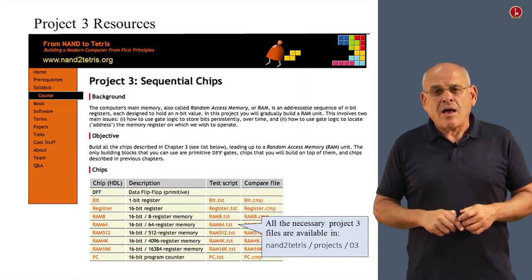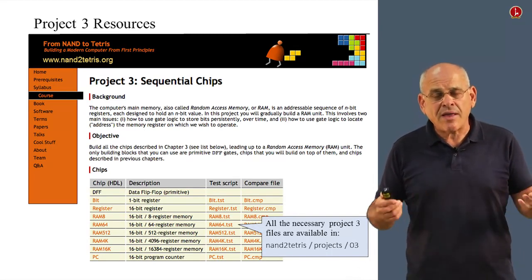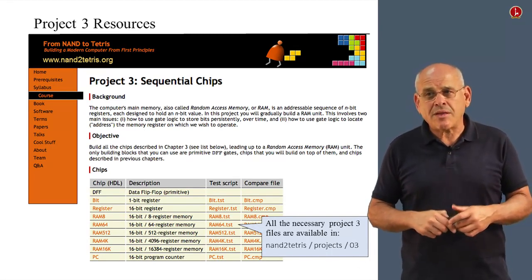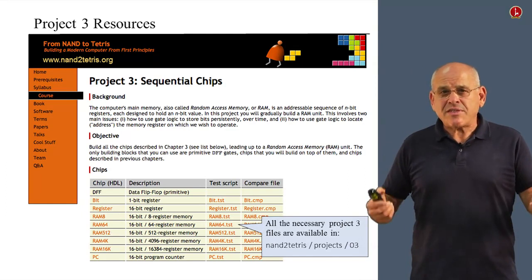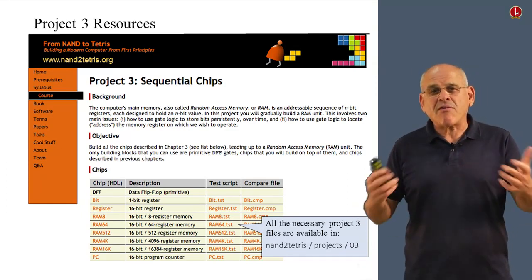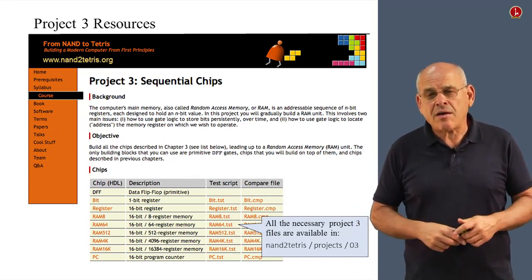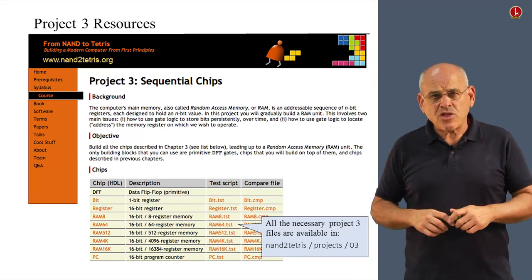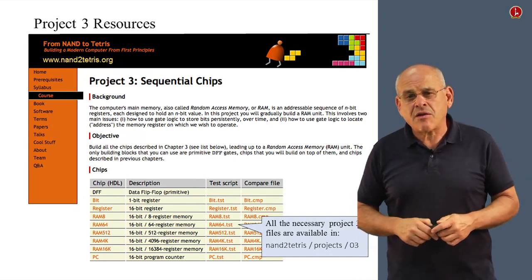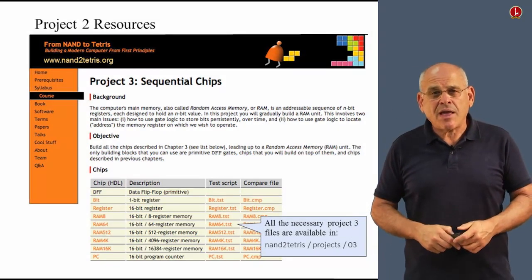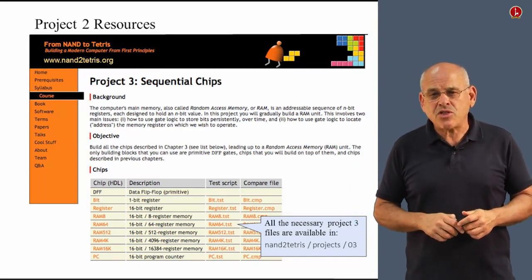As usual, you go to the NAND to Tetris website, and you will find the project webpage with lots of additional operational details. Once again, I want to emphasize for the third time in this course, that if you have downloaded the course software suite, there's no need to download anything in addition. This is just for documentation purposes. And you already have all the necessary files on your computer in the directory project slash 03, and you have your hardware simulator, and you're set to go and build all these chips on your own.